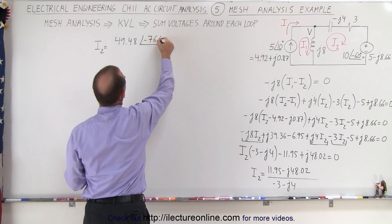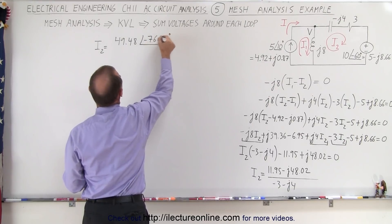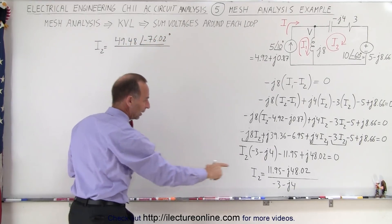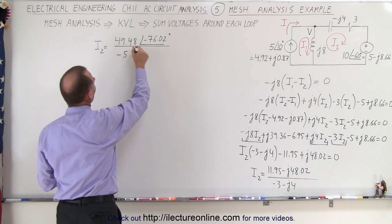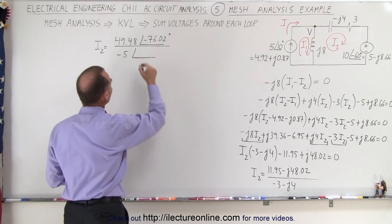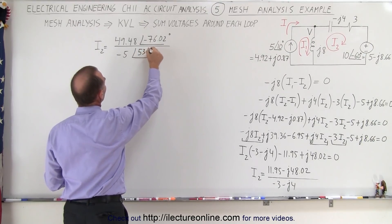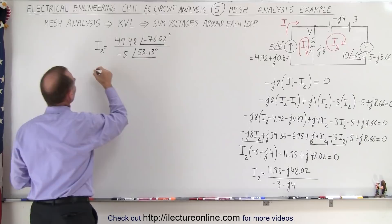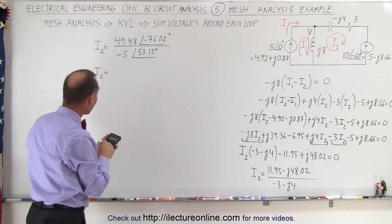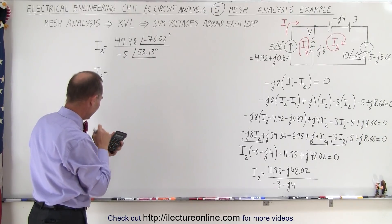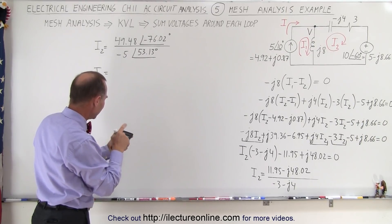So we have 49.48 with a phase angle of 48.02 divided by 11.95 inverse tangent minus minus 76.02 degrees divided by here we get a magnitude of 5, let's factor out the negative sign so that's minus 5 with a phase angle of that would then be a positive 53.13 degrees.